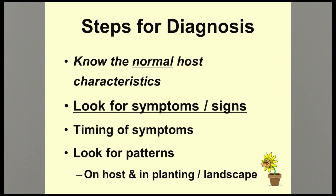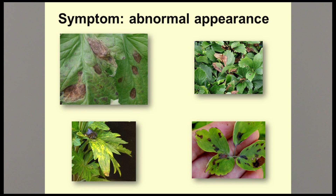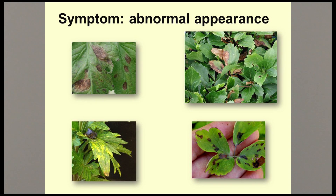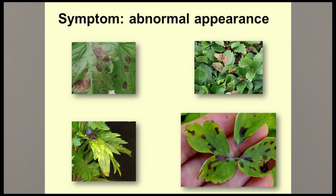Next, we need to determine what the symptoms are and look for evidence of any signs of the pathogen. A symptom is any abnormal appearance of the plant. Symptoms can include leaf spots as shown in the tomato leaf with early blight in the upper left, dead areas or blotches as shown in the pachysandra with volutella blight in the upper right, a mottled appearance as shown in the lower left of a virus infection in a monk's hood leaf, or angular leaf spots limited by the veins as shown on the columbine leaf in the lower right. Angular leaf spots are often associated with downy mildews, bacterial diseases, or foliar nematodes.